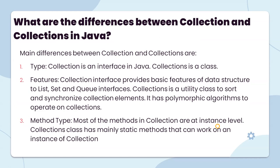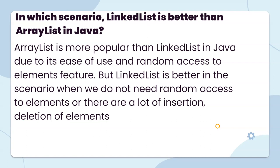What are the differences between Collection and Collections in Java? Collection is an interface in Java. The Collection interface provides the basic features of data structure — List, Set, Queue interface. Collections is the utility class used to sort and synchronize collection elements. It has algorithms for operations on collections. Most methods in Collections are static methods that can work on a collection instance. LinkedList is better than ArrayList in scenarios where we do not need random access to elements.